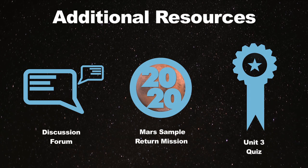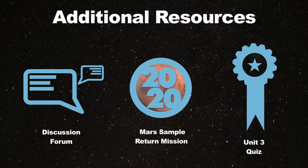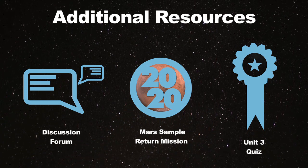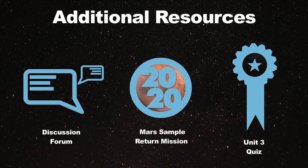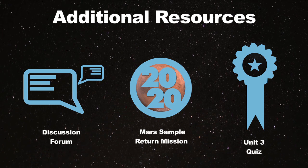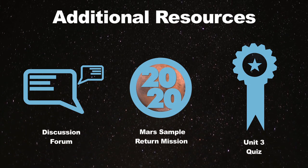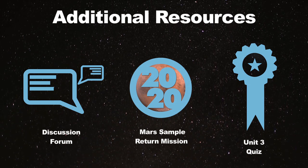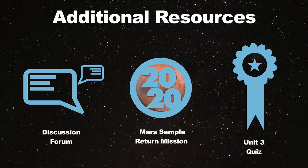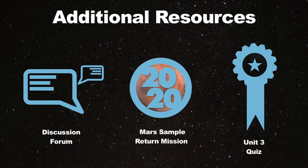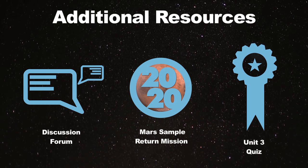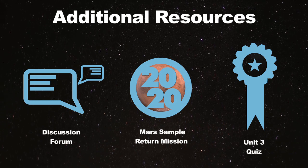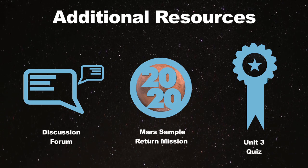Congratulations, you made it to the end of Unit 3. Answer the last discussion question in the forums, after which you can move on to the Unit 3 quiz. Remember that this will count for 10% of your final grade, so study hard and good luck. Once you've completed the quiz, you can continue your research for the Mars Sample Return Mission Project.